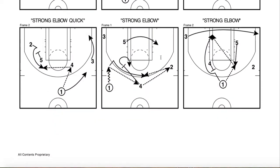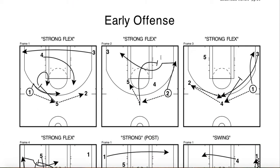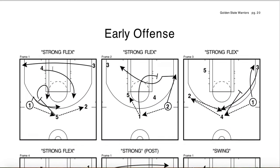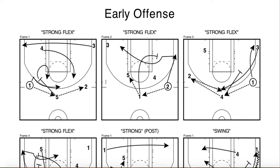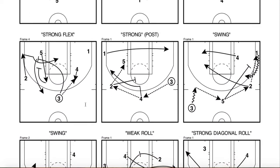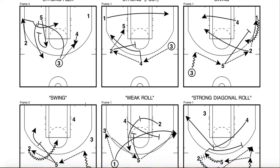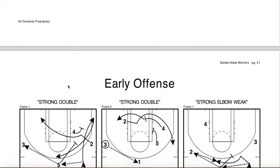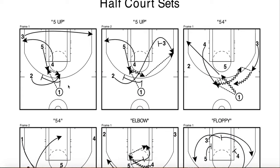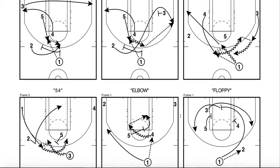Some more early offense — a lot of different plays, but also a lot of different read-and-reacts. Strong flex — these aren't 15 different play calls; it's just one play call showing you all the different options, all the things they could do out of that flex cut. Basic swing action, early offense — goes on and on. Here's some half court sets: continuity, motion stuff, elbow, floppy.